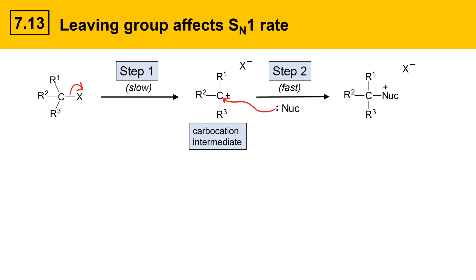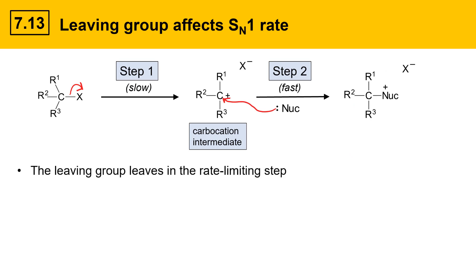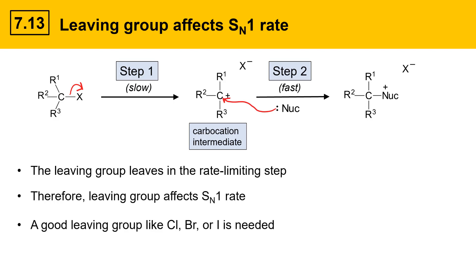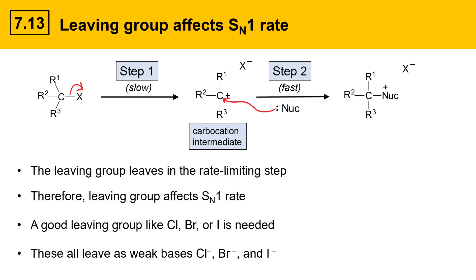Next, we'll look at the effect of leaving group. The leaving group leaves in the rate-determining step; therefore, leaving group affects the SN1 rate. A good leaving group like chloride, bromide, or iodide is needed — these all leave as weak bases. Cl⁻, Br⁻, and I⁻ are all weak bases. If you'd like to learn more about good and bad leaving groups, check out my SN2 substitution video covering leaving group in that reaction.